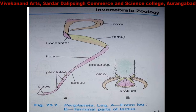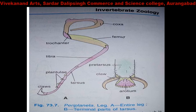After the tibia comes the tarsus region. The tarsus region has movable joints, and those joints are called podomeres. Where the tarsus region joins, those joints are called planuli.